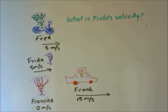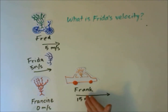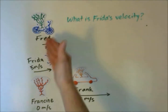The question is: what is Frida's velocity? Well, the answer to this question is not as simple as one solution. The velocity is measured relative to the frame of reference. So there will be a different velocity measured by Francine, a different velocity measured by Frank, and a different velocity measured by Fred.